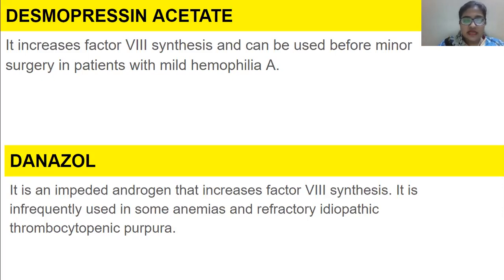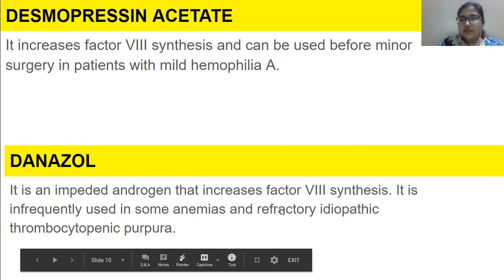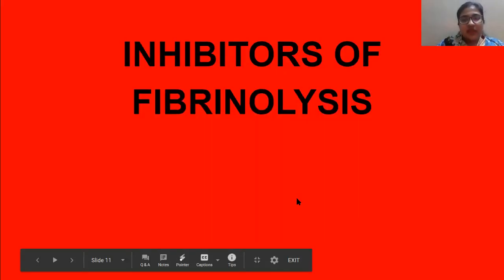We also have danazol, an impeded androgen that increases factor 8 synthesis. It is infrequently used in some anemias and refractory idiopathic thrombocytopenic purpura. Purpura refers to purplish impressions — purple circles on the skin due to accumulation of blood in the skin. Refractory means not responding to treatment.